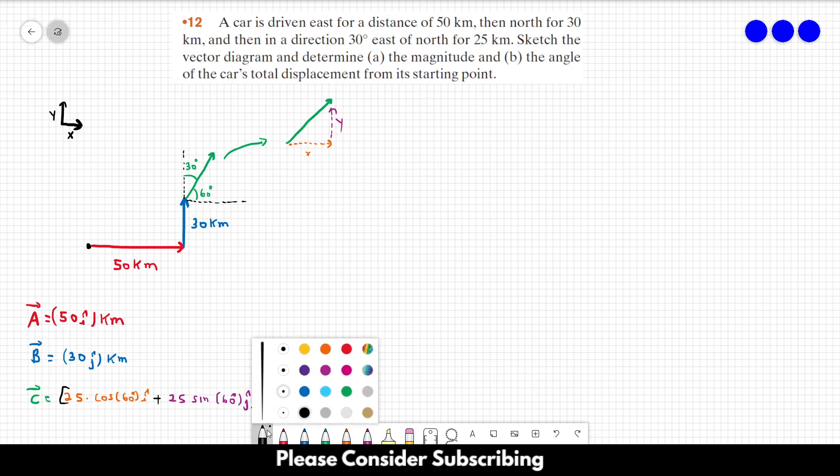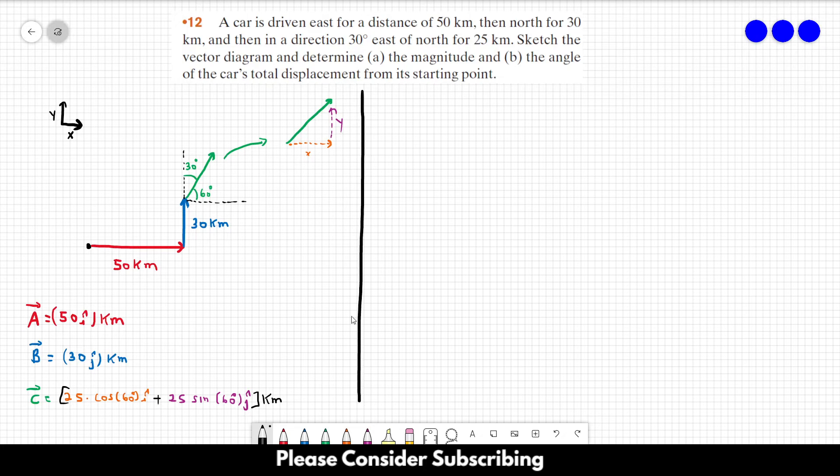So those are our three vectors that we have in the car movement. And this is the drawing that we had to do. So now we want to find out the magnitude of the vector. But first we have to sum everything up. So we have to do A plus B plus C.